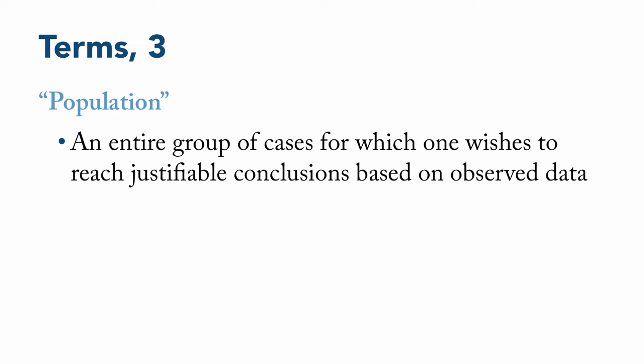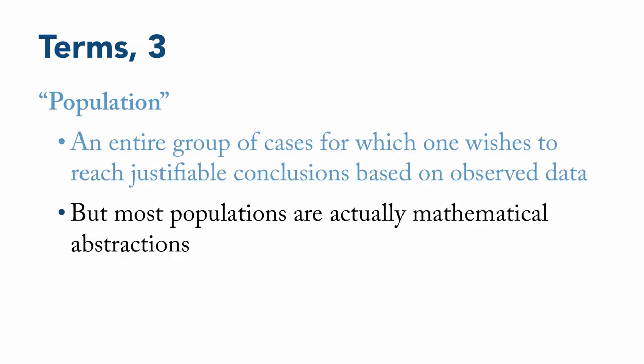Next is the term population. This refers to an exhaustive group of all of the people or cases in a category that you're interested in. It's the group that you want to talk about even if you can't get data from all of them. In statistics, however, it's often the case that when we talk about a population, what we're actually talking about is a mathematical abstraction that's defined by a formula. This is certainly the case when we get to inferential statistics later in the course.